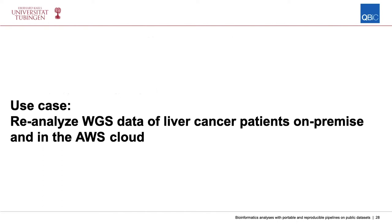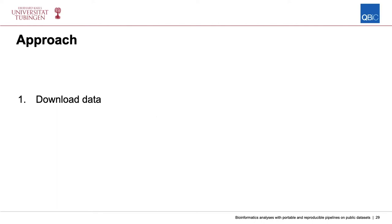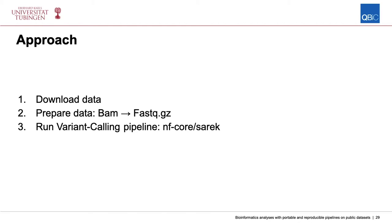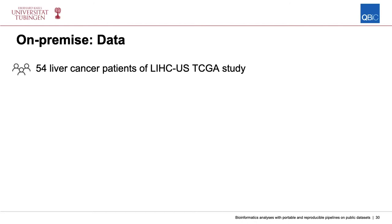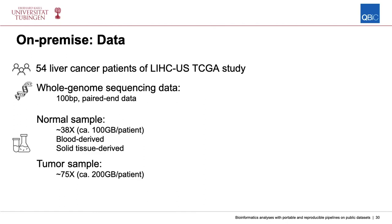As part of my PhD, I'm reanalyzing whole genome sequencing data from 54 liver cancer patients, part of the LICA-US TCGA study. It's short-read paired-end data, sequenced quite deep — normal samples at around 38X and tumor samples about twice as deep, coming out to around 300 gigabytes per patient. We explored running this analysis both locally and on AWS.